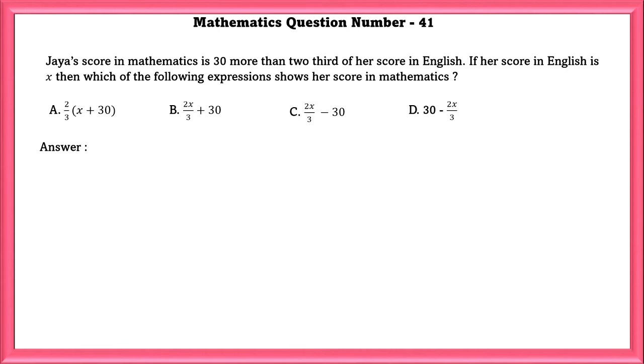Mathematics question number 41. Jaya's score in math is 30 more than two-thirds of her score in English. If her score in English is X then which of the following expression shows her marks in math. Jaya's score in English is equal to X. Jaya's score in math is equal to X into 2 by 3 plus 30 which is equal to 2X by 3 plus 30.